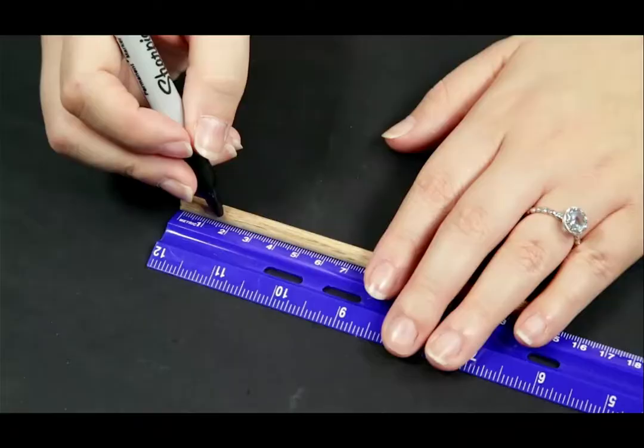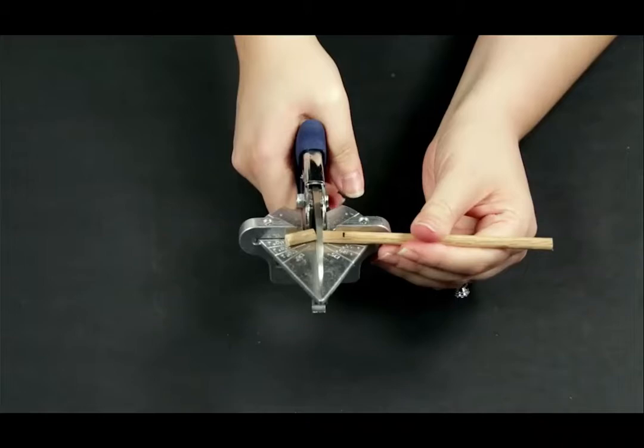Step 14: Cut 2 pieces off of the 1⁄4 inch dowel, each 1 1⁄2 cm long.